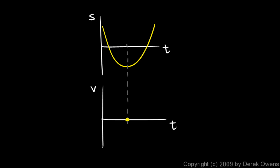Let's think about what's happening on either side. Going to the right from that point, the slope is getting positive and getting bigger, so I'll draw my v graph as getting positive and getting bigger. To the left, starting from the far end, the slope starts off as a very large negative value — it's steep in the negative direction. As we move toward the vertex, it gets less and less steep in the negative direction, all the way until the slope is zero. So I start off with a very negative value on my velocity graph, and it gradually gets less negative and eventually becomes zero. There's a graph and its derivative.